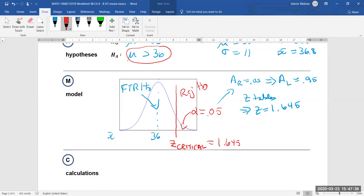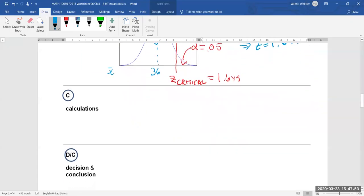And what we can realize is that if our calculated zed statistic falls in this region here then we'll reject H naught. If it falls over here then we're going to fail to reject H naught. So let's move on now to our calculations.